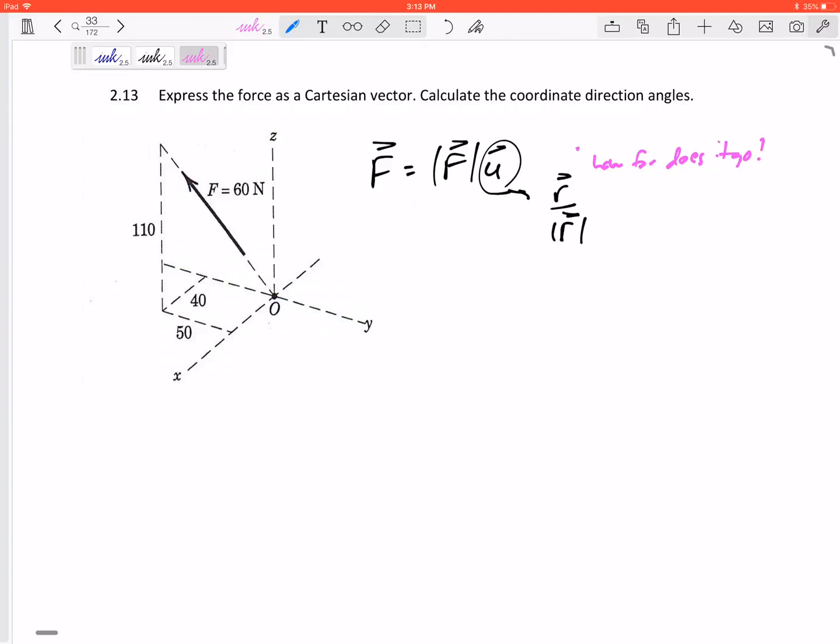I've got the magnitude, it's 60 Newtons, so now I need U. I need R over R. So what is R? R is how far does it go in the x direction? That would be this length right there, that would be 40 in the I.